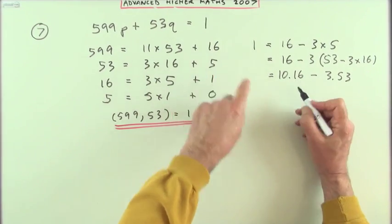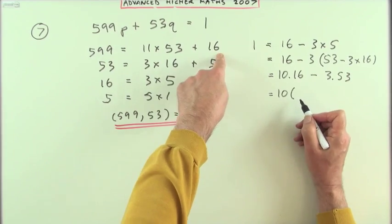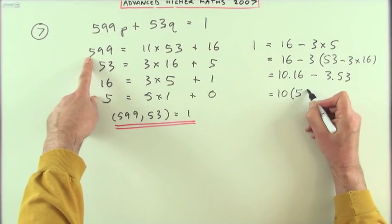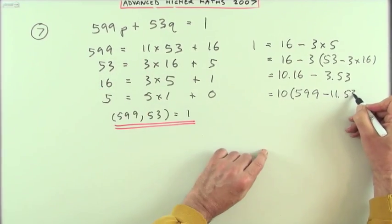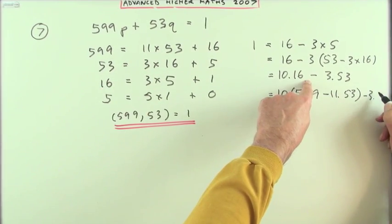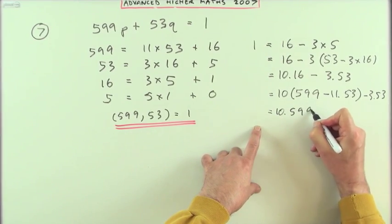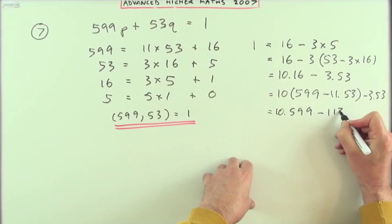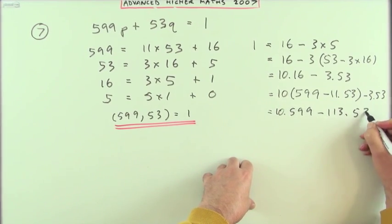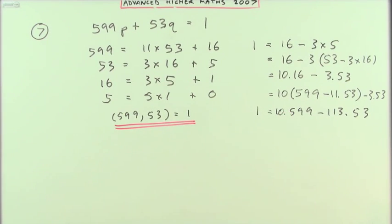Now I can go up to 16 and replace that. So I've got 10 times whatever 16 can come from. That was my original 599 take away 11 lots of 53 minus the 3 lots of 53. So that will be 10 times 599 minus 110 and another 3 minus 113 lots of 53.